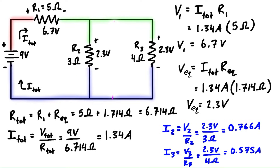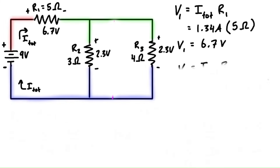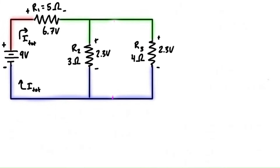That's a nice check to confirm we've done everything correctly. We can also use Kirchhoff's voltage law, which states that the algebraic sum of voltages around a loop is 0. Let's erase some of the work and take a look at one loop at a time. Let's look at the right-hand loop first and draw on a direction — let's go clockwise.